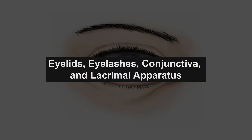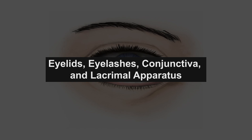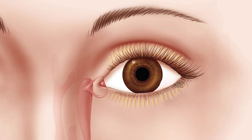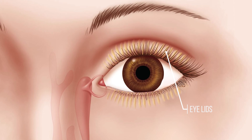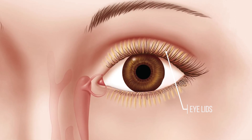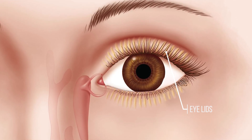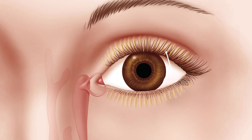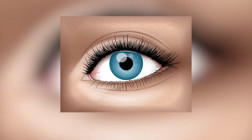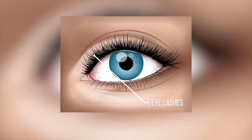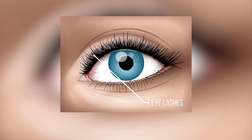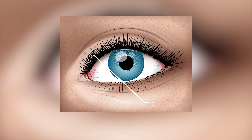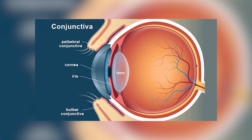The eyelids are movable structures that protect the eyeball from mechanical injury and serve to spread the tear film uniformly across the eye during blinking. Eyelashes act as a first line of defense, trapping dust and small particles before they can reach the eye's delicate surface. The conjunctiva is a thin and transparent membrane that covers the sclera and lines the inside of the eyelids.